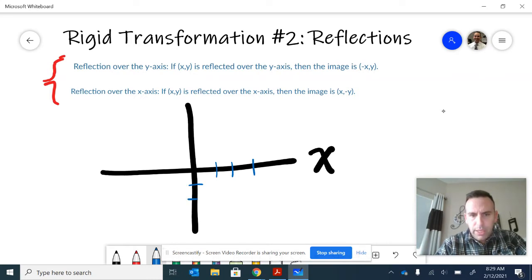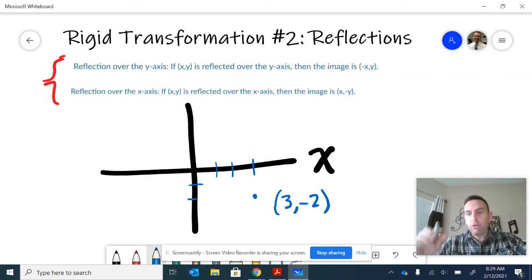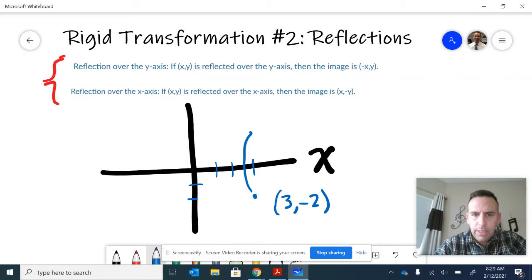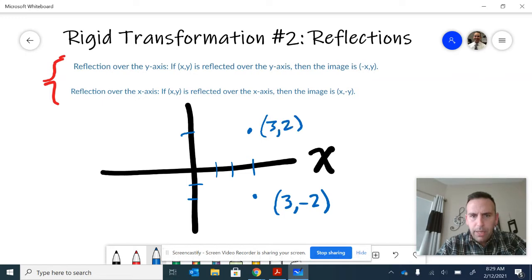If we think about the point (3, -2) right there and we were to reflect it or fold it across the x-axis, this point would map directly across the x-axis to a point that is perfectly above it vertically. It would map up here to the point (3, 2).